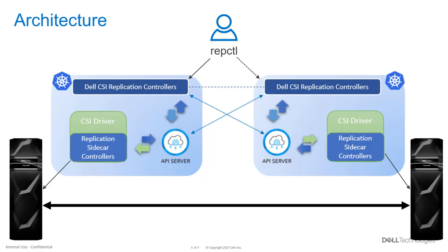Talking about the architecture of the Dell CSM Replication Module, the idea is to manage the lifecycle of persistent volumes directly from Kubernetes. It supports all three replication types — synchronous, asynchronous, and active-active with Metro — assuming that the underlying storage array supports it.